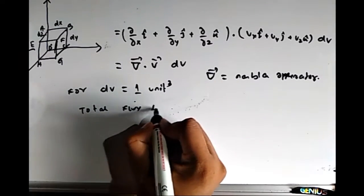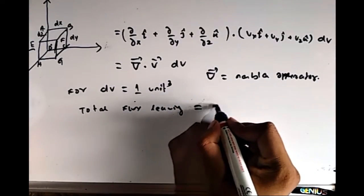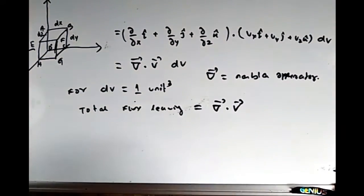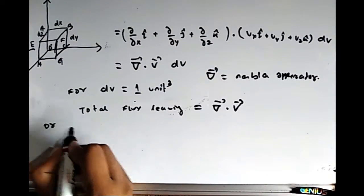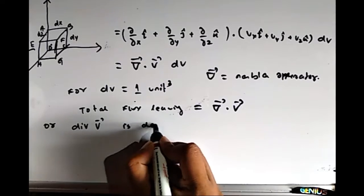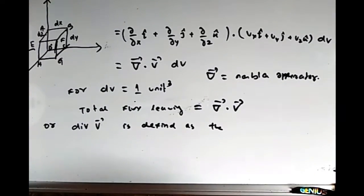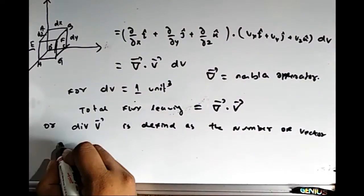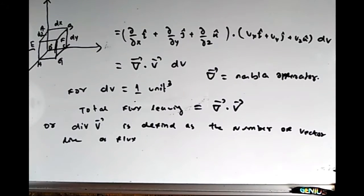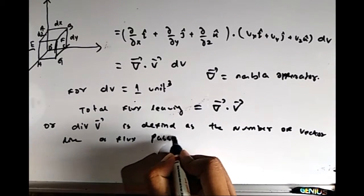Now if we put dV equal to one unit cube, then divergence of V is defined as the total flux or number of vector lines passing through a unit volume. Simply put, divergence of a vector field represents how much change is occurring inside a unit volume.